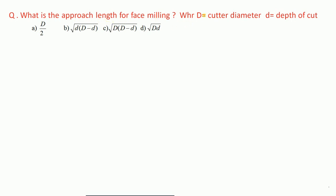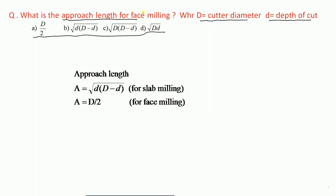What is the approach length for face milling, where D is the cutter diameter and d is the depth of cut? For slab milling, approach length A = √(d × (D − d)). For face milling, the approach length A = D/2. Therefore, option A is correct.